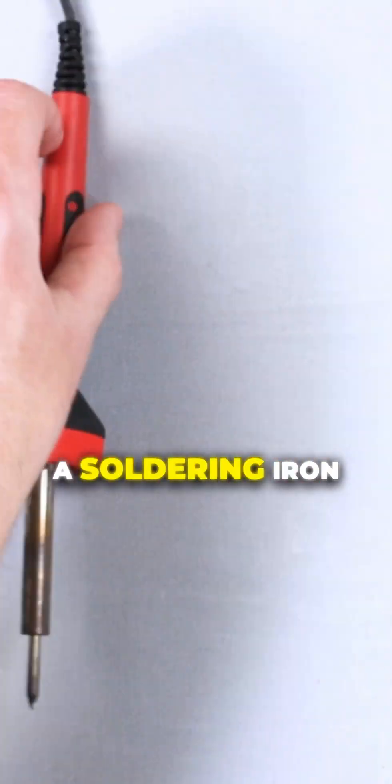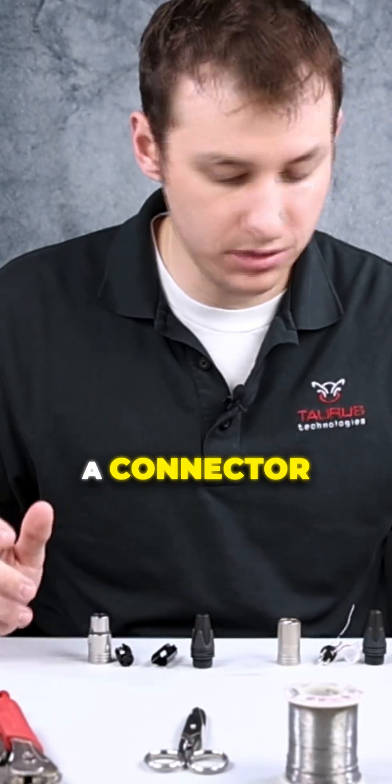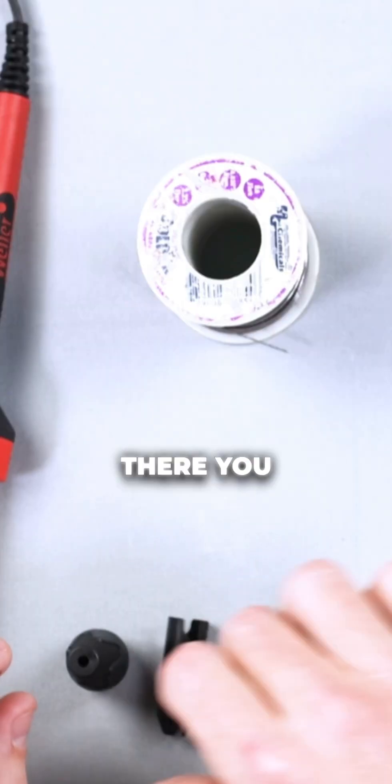First, you're gonna need a soldering iron, some solder, snips, some vice grips, a connector, a bushing. This is an insert, a housing chuck.